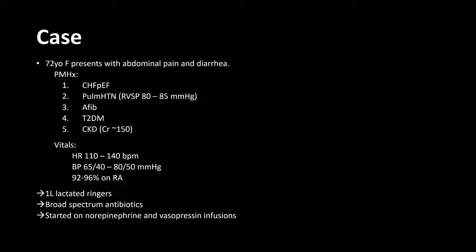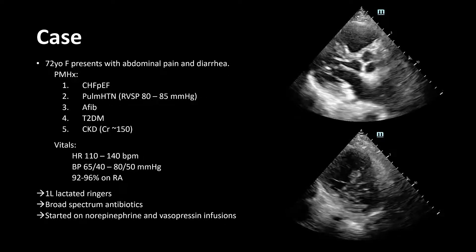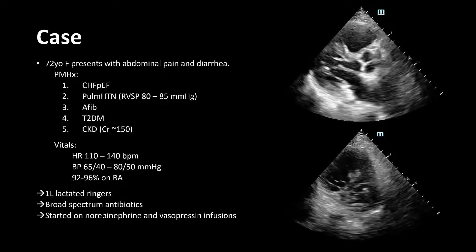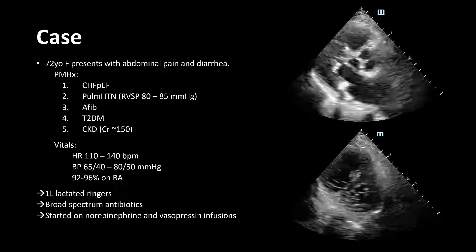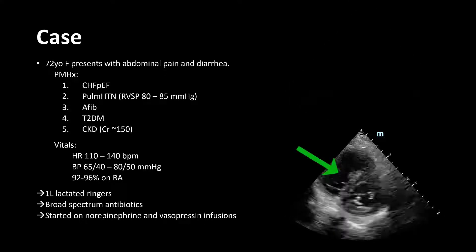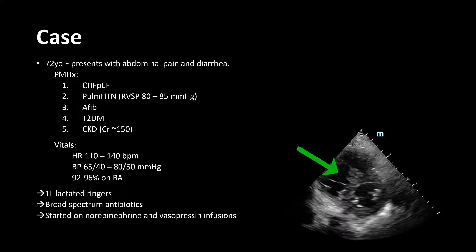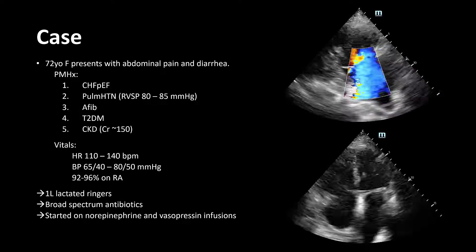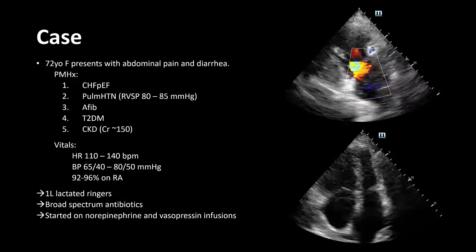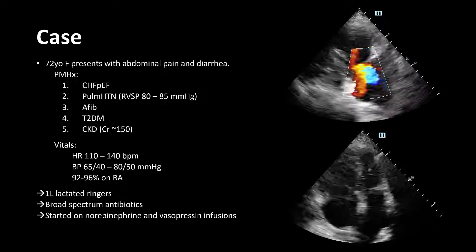Let's jump right into a case. A 72-year-old female with a history of pulmonary hypertension presents to the emergency department with abdominal pain, appears to be septic, she's tachycardic, hypotensive, receives a liter of fluids, broad-spectrum antibiotics, and is started on vasopressor infusions. On POCUS, her LV ejection fraction appears to be pretty normal, but there is some interventricular septal flattening, maybe a component of RV volume or pressure overload. There's a significant amount of tricuspid regurgitation, and her RV is dilated bigger than her LV.